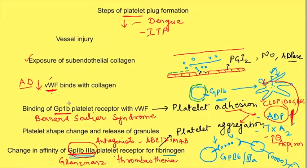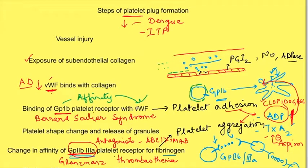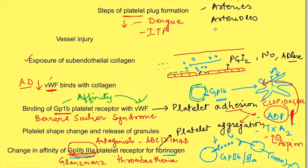GP1B normally does not bind with von Willebrand factor in circulation. It is only with the change in shear force at the site of injury that the affinity of GP1B towards von Willebrand factor changes, allowing binding only at the site of injury. Since the initial adhesion of platelets depends on shear force, which is greater in arteries and arterioles, platelets play a major role in hemostasis in arteries and arterioles, and are also sufficient to plug capillary injuries which occur daily.